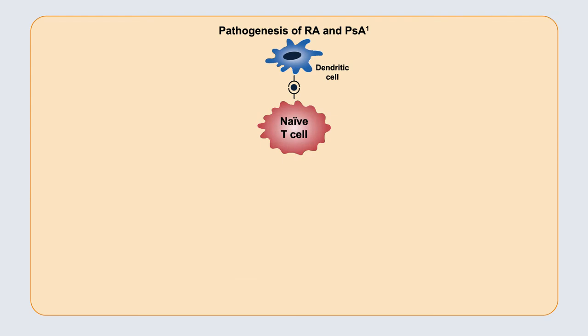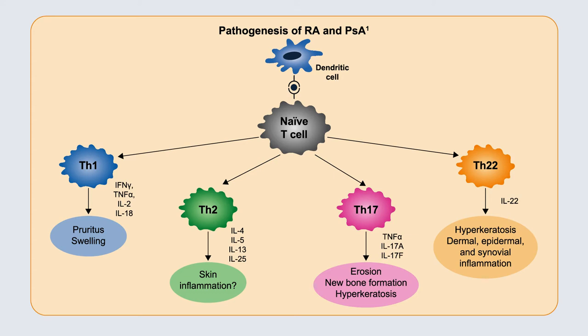Now let's talk about pathogenesis. Starting at a dendritic cell presenting a peptide to a naive T cell with a cognate receptor, that T cell will ultimately be polarized into a number of different cytokine-producing subsets. These are somewhat artificial and plastic, as they can move back and forth. The generation of a Th1 response with its emblematic interferon-gamma signature can be seen in both RA and psoriatic arthritis and psoriasis, and may contribute to varying manifestations of disease. These pathways are being targeted by numerous targeted therapies that have been highly effective.